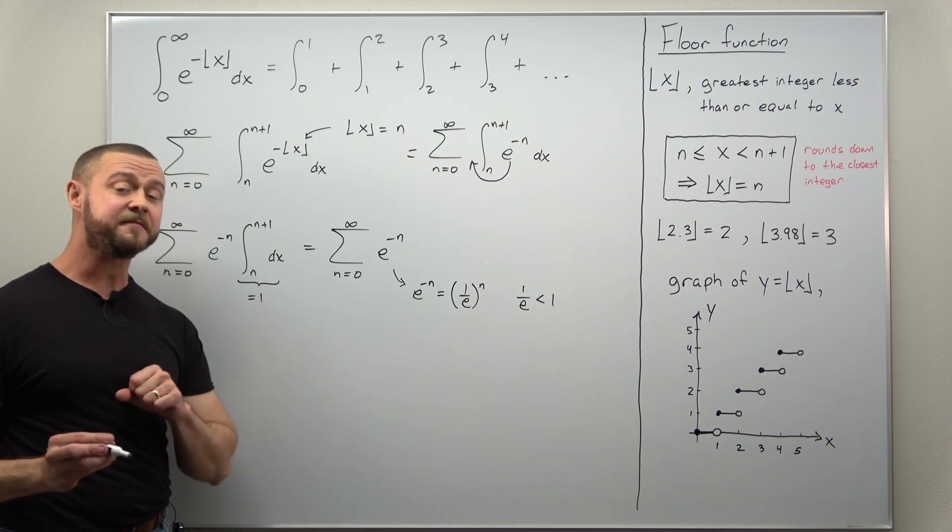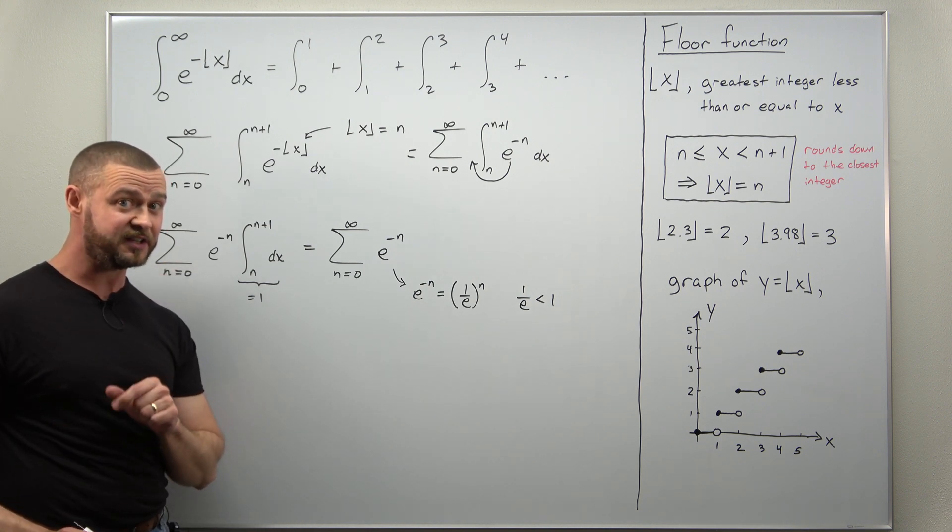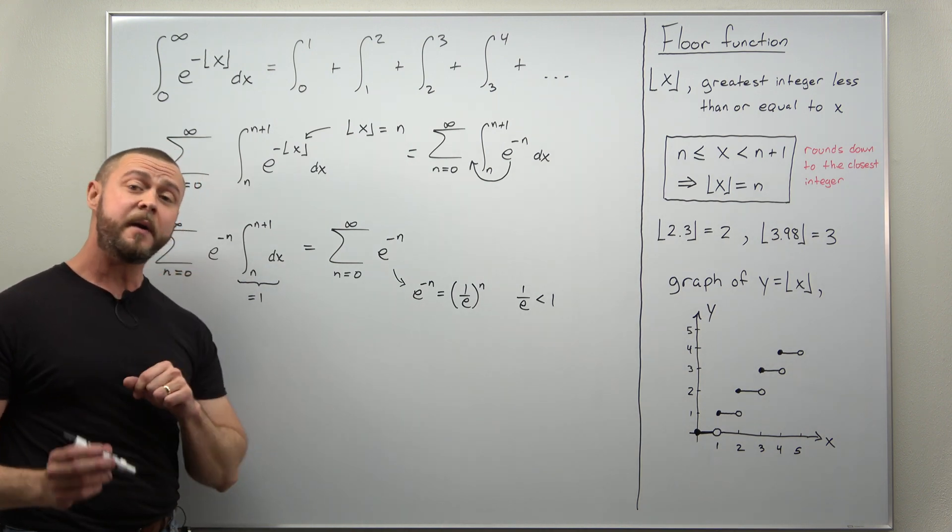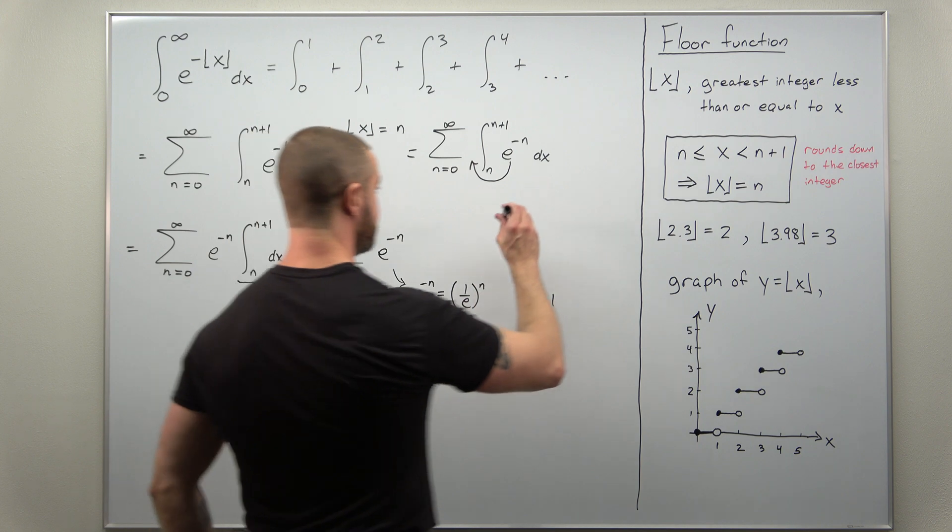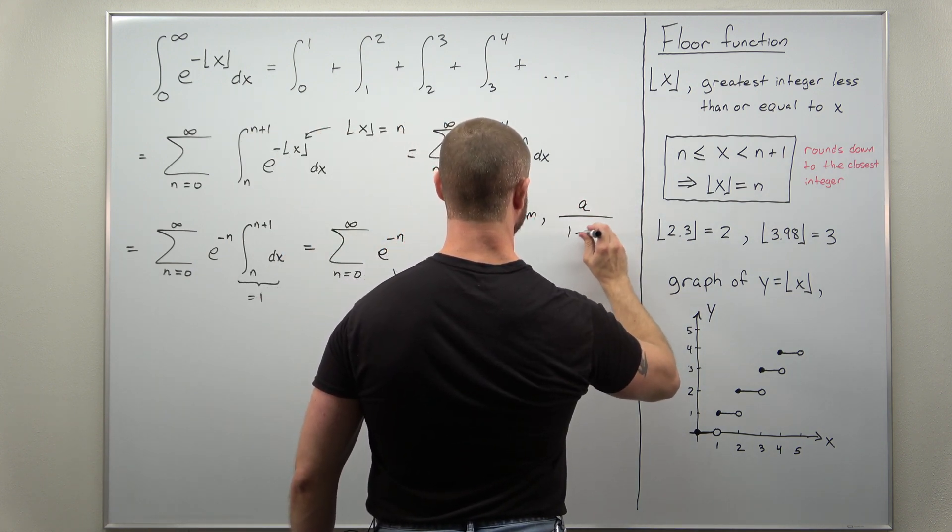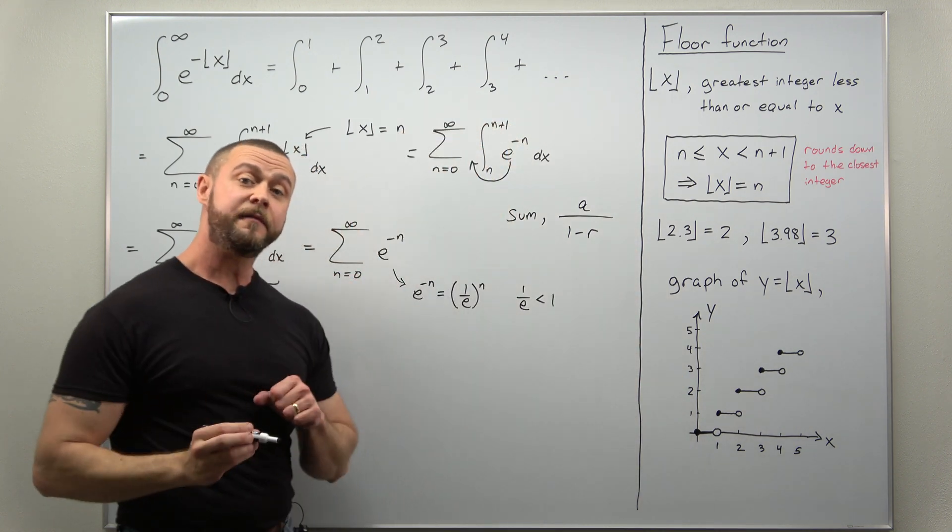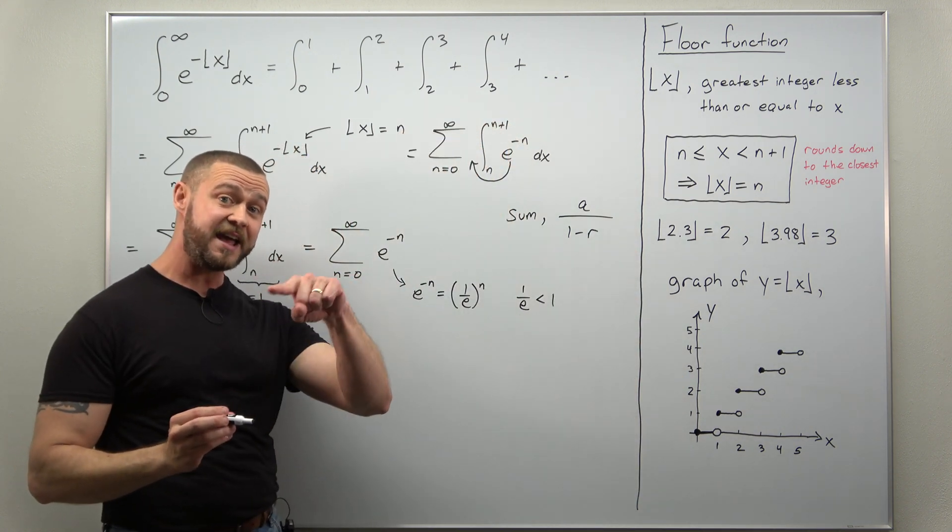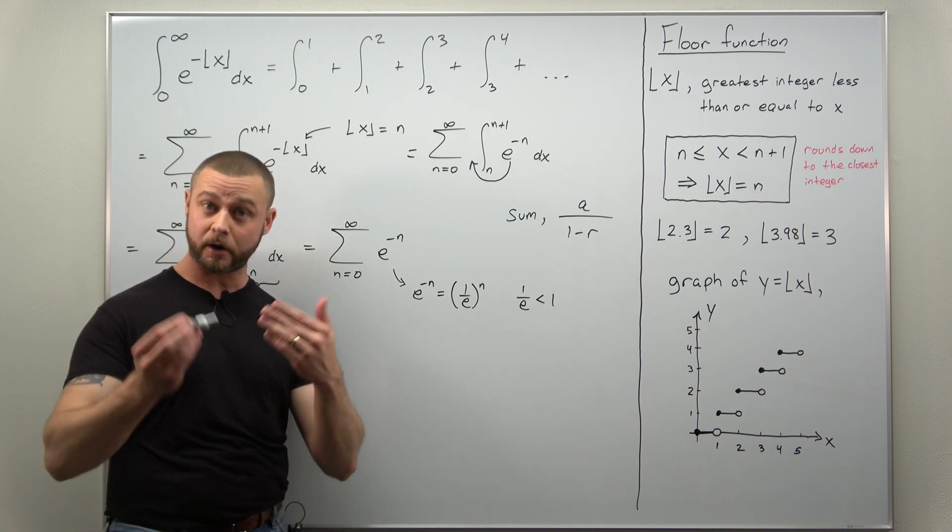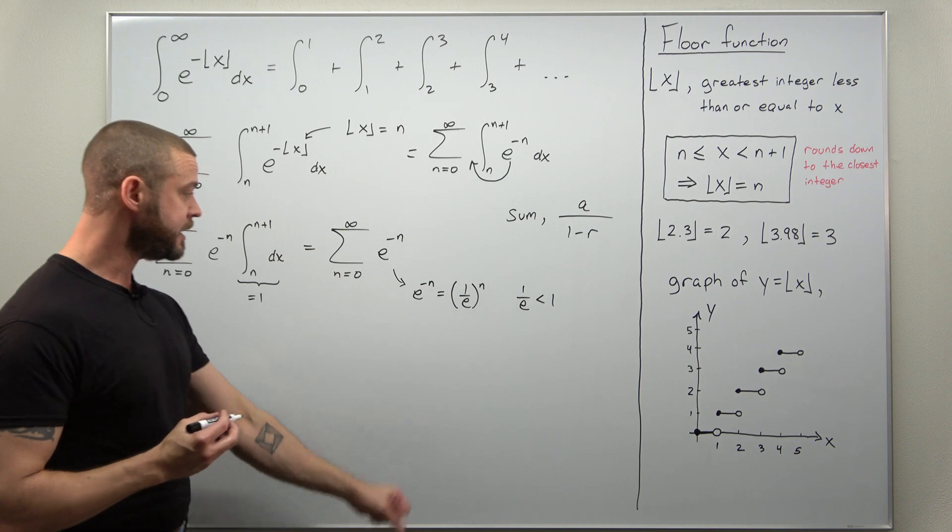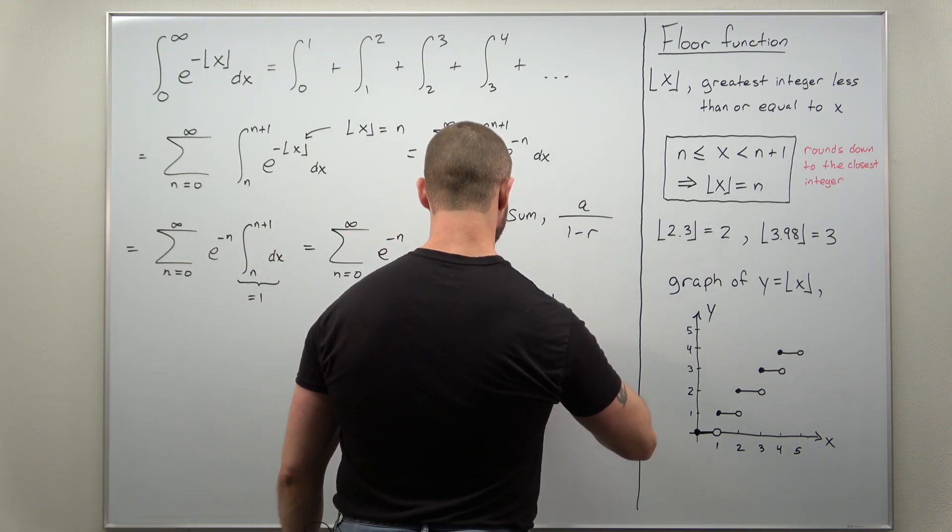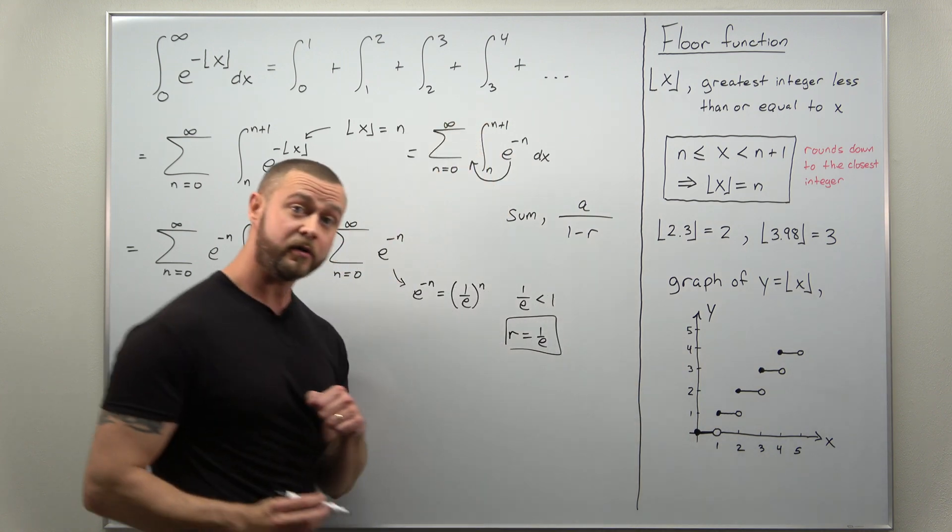The nice thing about a convergent geometric series is you can find the sum and that's going to be the value for our integral. Now you might not be familiar with the sum formula, but the formula for the sum of a geometric series is a divided by 1 minus r, where a is the starting term and r is the common ratio. And here we're going to be using r as 1 over e.